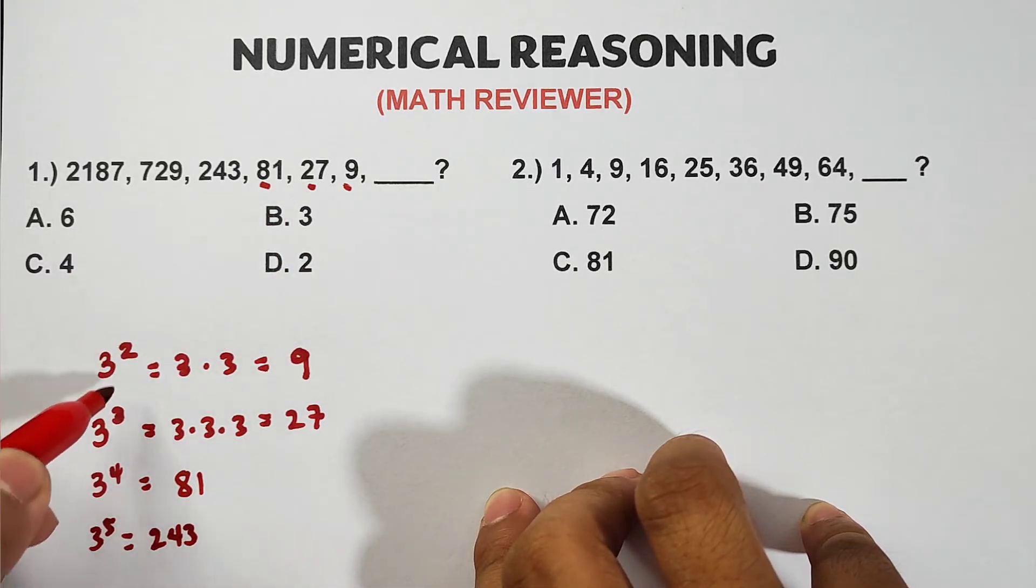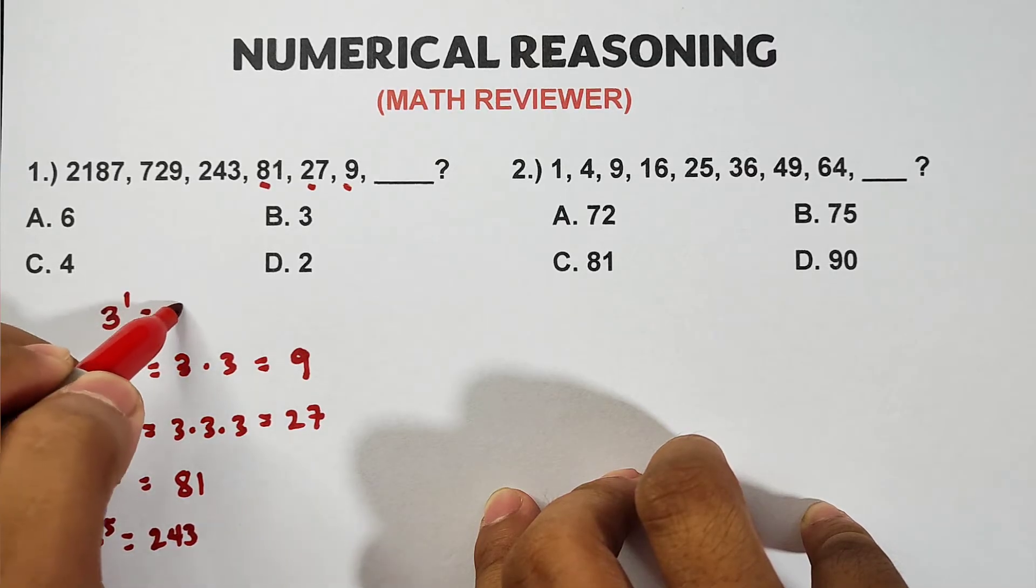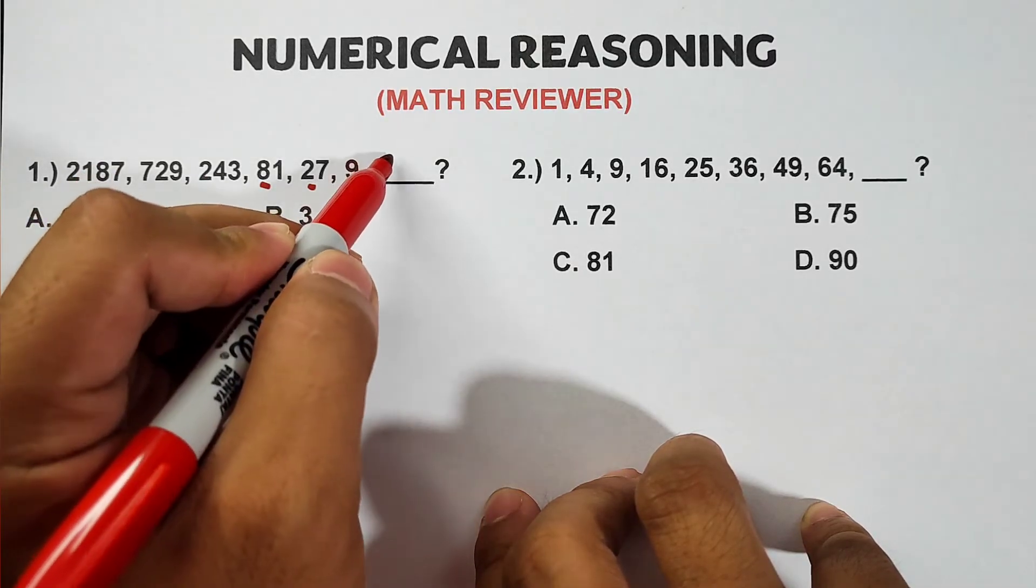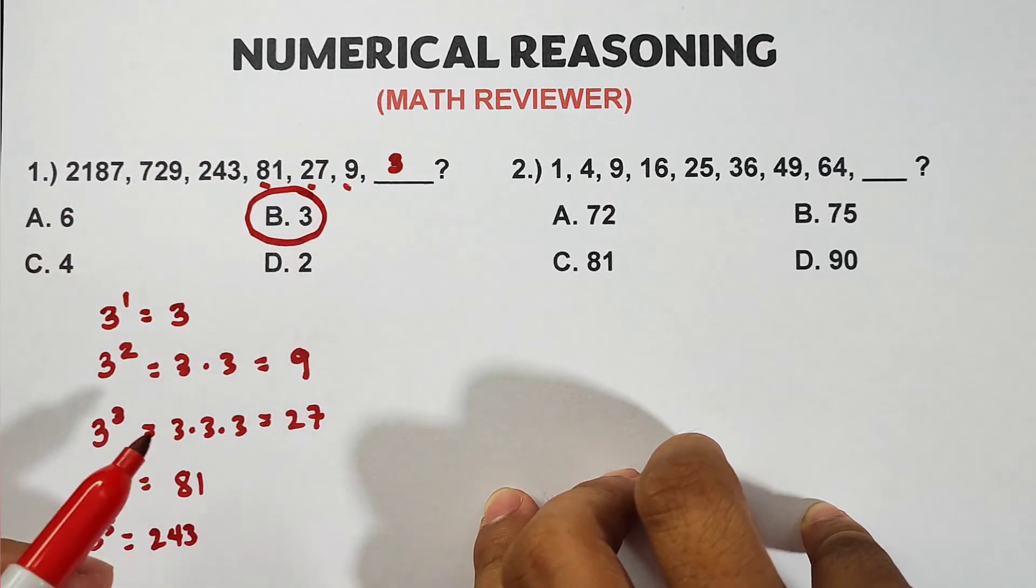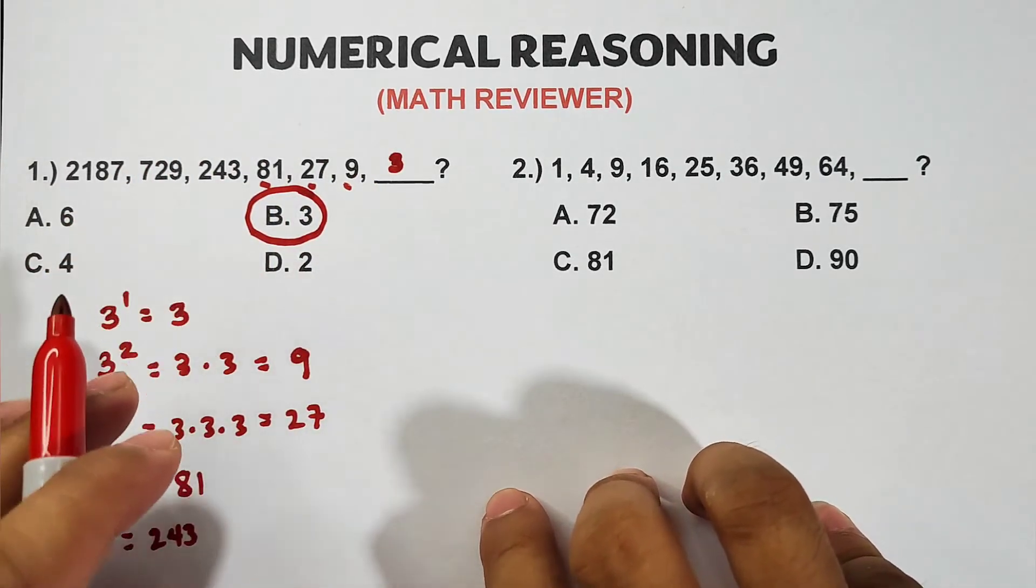Meaning guys, to get this, if this is 2, 3, 4, 5, that means it equals 3 raised to 1 or equal to 3. The missing number here is 3, which is letter B. Okay, this number series at the beginning was fairly easy.